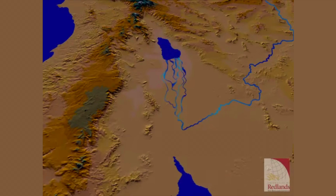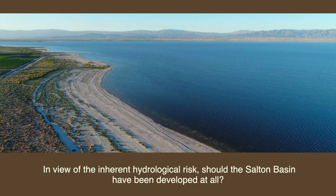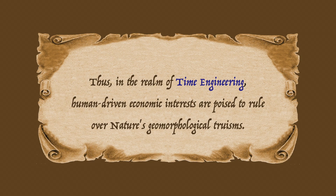Will the Colorado River again attempt to flood the Salton Basin in the future? The answer is probably yes. Much less certain is the time frame of the probable occurrence. In typical geomorphological character, the associated return period would be anybody's guess. In the meantime, life, in most of its manifestations, continues to thrive in the Salton Basin. In view of the inherent hydrological risk, should the Salton Basin have been developed at all? The answer has socioeconomic and political implications: yes, as long as the risks are recognized and noted for the future. In practice, the chances are slim that we may ever get to experience the event. Thus, in the realm of time engineering, human-driven economic interests are poised to rule over nature's geomorphological truisms.